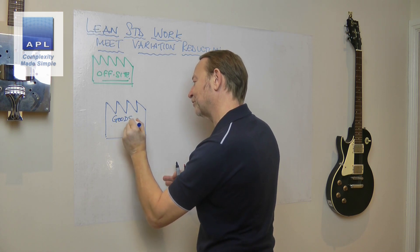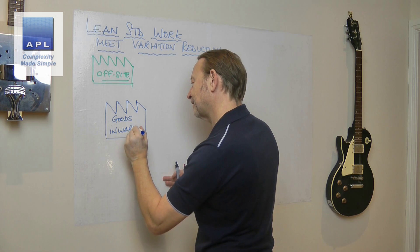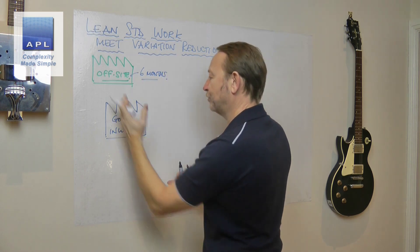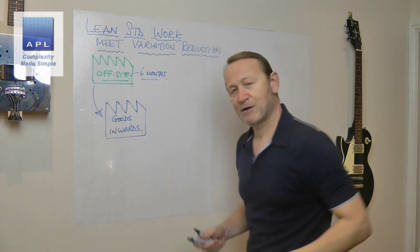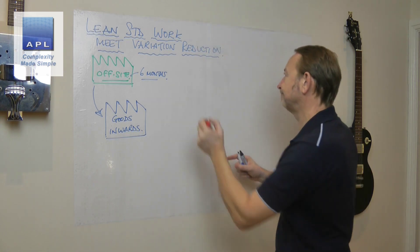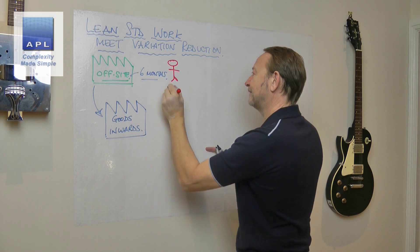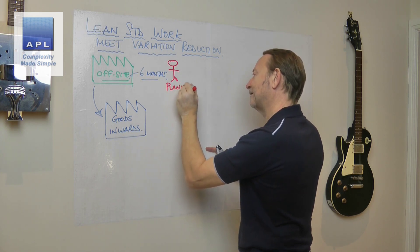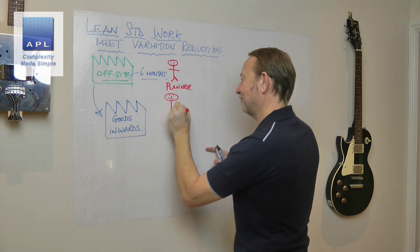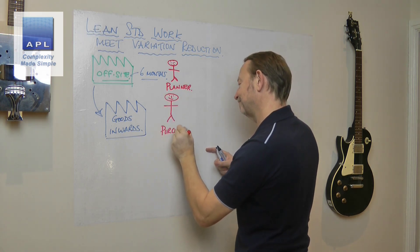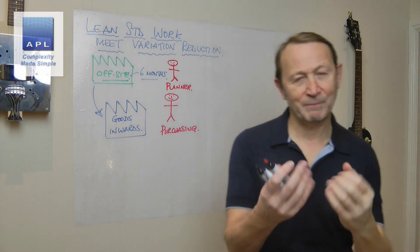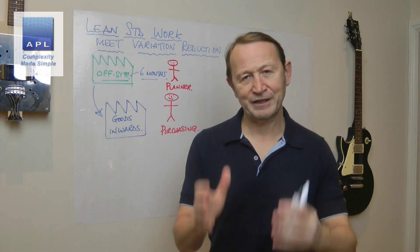They have to decide how much material to pull on site. So you've got six months of stock sitting off-site - effectively goods inwards - and they haven't got room for it all on site. Currently what happens is a planner puts his head together with somebody from purchasing.